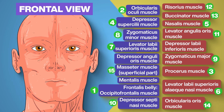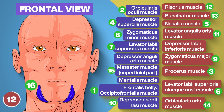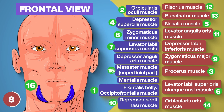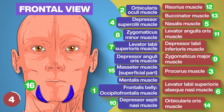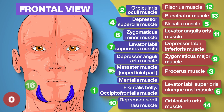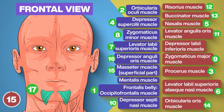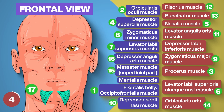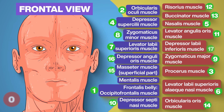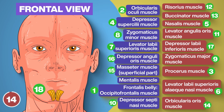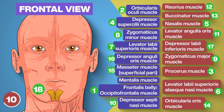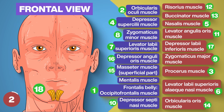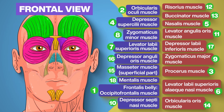Number 16: Masseter muscle, superficial part. Number 17: Depressor anguli oris muscle. Number 18: Depressor labii inferioris muscle. Mentalis muscle — keep it up, we're almost there.